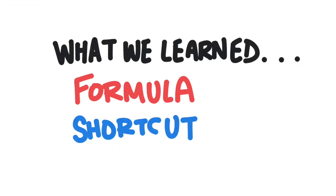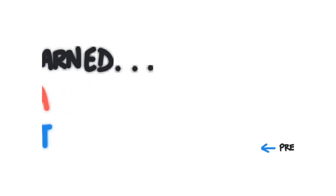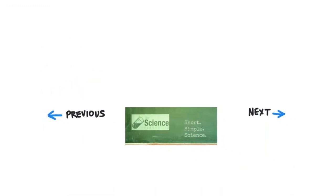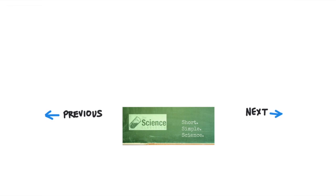In this video, we learned how to write the formula when we're given the name for an ionic compound, and we learned the shortcut where we can cross those charges and determine the subscripts really quickly. Thanks for watching. You can support the Science Classroom by liking this video and subscribing to our channel. You can also support us on Patreon by clicking the link in the video or in the description.